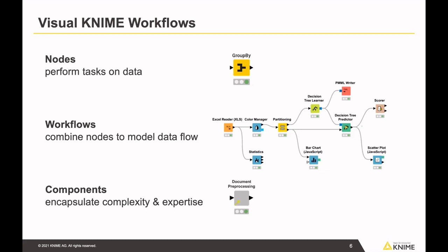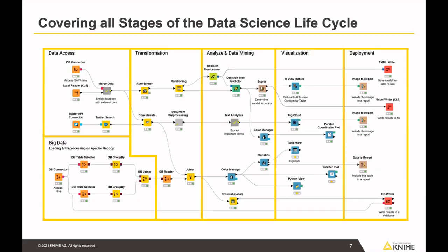Beyond individual nodes, there's a third layer: you can encapsulate functionality into so-called components, which look like nodes but contain a mini-workflow inside. You can build components yourself to modularize your workflows, or reuse components provided by KNIME or the community. A complete workflow covers the full data science lifecycle: reading data from Excel or databases, connecting to APIs, transforming data, classification with decision trees, visualization, and writing results back to Excel, PDF, or PowerPoint reports.